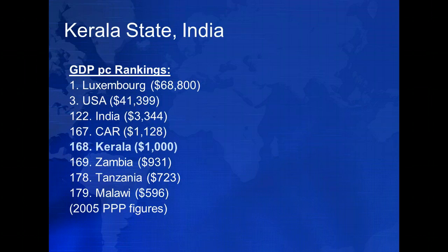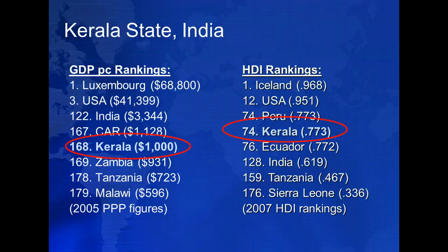Kerala's achievements reflect broad commitment to human development, even in the context of ongoing poverty. If Kerala were a country, its per capita GDP would be about $1,000, placing it 168th in the world, behind the Central African Republic, but ahead of Zambia. But in terms of human development, Kerala performs much better. The Human Development Index is a composite measure of total social development, incorporating a broad array of factors like mean years of schooling and life expectancy at birth, in addition to GDP. Looking at the Human Development Index, Kerala jumps nearly 100 places, from 168th to 74th overall.